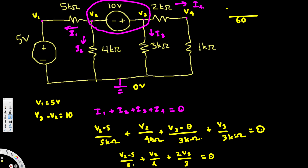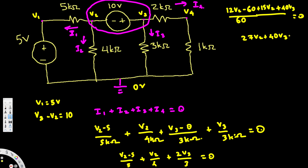Multiplying through by 60: 12 times (V2 minus 5) gives 12V2 minus 60, plus 15V2, plus 40V3 equals zero. Moving the minus 60 to the other side: 12V2 plus 15V2 is 27V2. So we get 27V2 plus 40V3 equals 60. This is equation two.